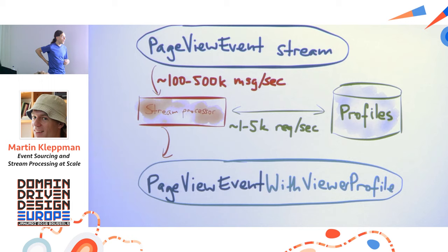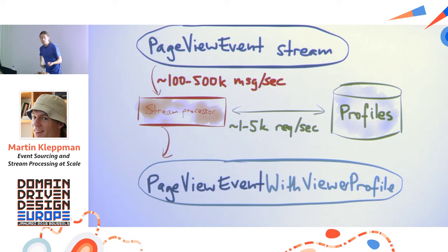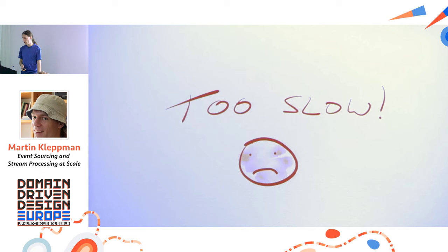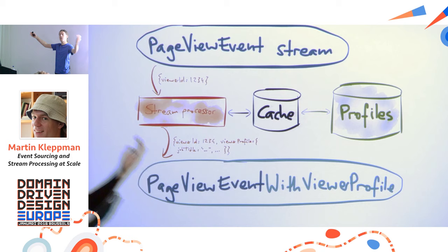The problem is performance. These event streams can be quite high volume — the stream processing system I worked on handles hundreds of thousands of messages per node, and distributed across multiple machines you can get throughput of millions of messages per second. But if you're doing that query volume to a database, your database will not be happy. There's at least two orders of magnitude throughput difference between the rate we can sensibly query a database and the rate at which events are coming in.